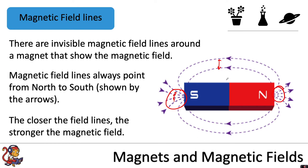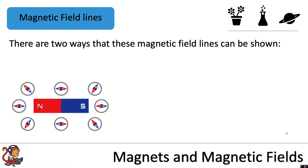The field is slightly weaker as you go away from the magnet because the field lines are further apart. The arrows always go from north to south — going in this direction at the top and bottom, and they go out of the north and into the south. There are two ways that magnetic field lines can be shown.